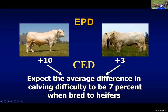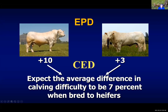For this situation, the bull on the left — the higher value calving ease direct — means that would be the better bull for assuring calving ease. The percentages have to do with when they're bred to heifers, but even on mature cows, this bull would be the easier calving bull to use as well. The percentages might not be the same — it would probably be a lower degree on cows — but he would still be the better bull for calving ease.